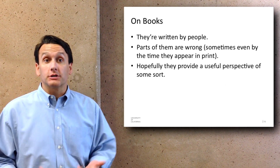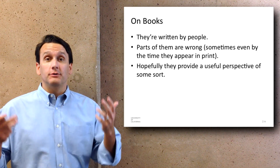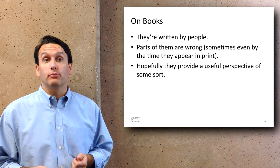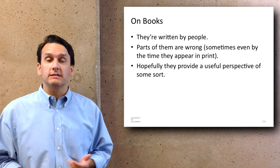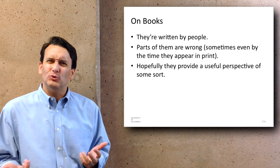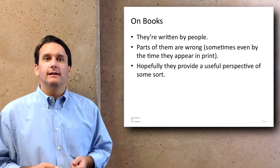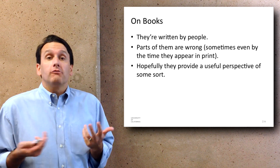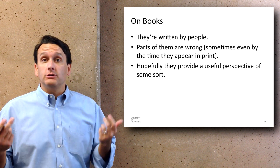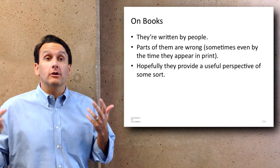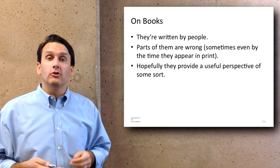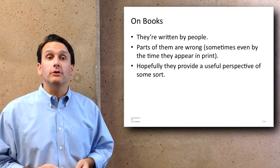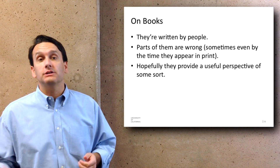I also wanted to make a point about books. Ultimately they're written by people — I'm just a guy and I wrote this book, and parts of it are wrong. Sometimes they're even wrong by the time they're in print. There are various aspects of the Greening Through IT book that when I read them now I wish I hadn't written quite like that. When you read a book, note that it's just written by a person who had some opinions. Often they're an expert in the field, but that doesn't mean they're perfect in their understanding or that their understanding doesn't change over time.